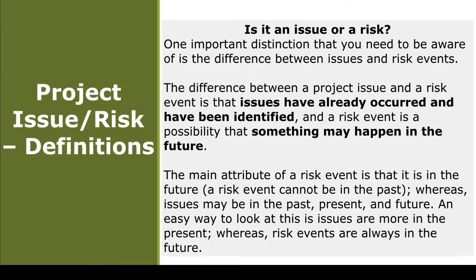One thing we often get confused with is what's an issue and what's a risk. I pulled this right out of my book, The Project Management Communication Tools. The important distinction is: issues have already occurred and have been identified, while risk is something that may possibly occur in the future. So issues we're dealing with now; risks may occur. That's a radical difference. If you've got an issue, you've got to be constantly working it until it's resolved. If you've got a risk, you have to work it, but it may never happen.